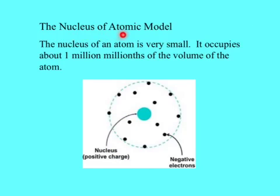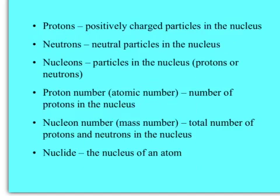The nucleus of atomic model. The nucleus of an atom is very small. It occupies about one million millionth of the volume of the whole atom. You know most of these. Firstly, protons - positively charged particles in the nucleus. Neutrons - neutral particles in the nucleus.